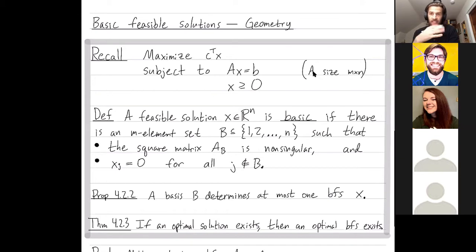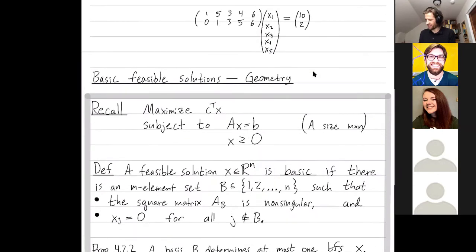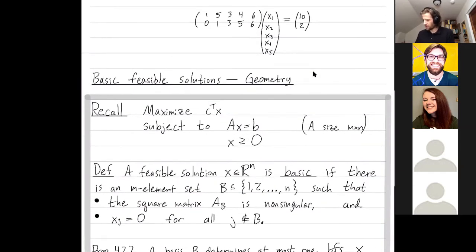A feasible solution, that means a solution that's not negative and solves Ax equals b, is basic if you can find an m element subset, capital B, of the numbers 1 up through n, such that the restricted matrix restricted only to those columns has linearly independent columns. And furthermore, the solution vector x is 0 in all other variables. Here is our matrix A, and here's our vector x, and here's our vector b, and A is of size 2 by 5, so m is equal to 2 and n is equal to 5.